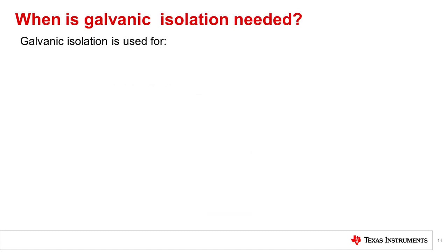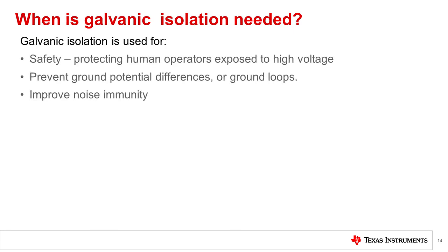When is isolation needed? Isolation is required in modern electrical systems for a variety of reasons. Some examples include preventing electrical shock to human operators, protecting expensive processors, ASICs, or FPGAs from risk of damage in a high voltage system, and breaking ground loops in communication networks such as motor drives or power converter systems. Let's look at the three main reasons galvanic isolation is used between circuits.